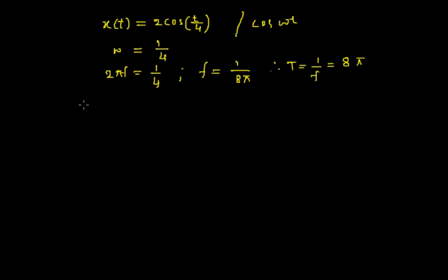Next, to test the periodicity, I will consider the signal x(t + T) which equals 2 times cosine of... I will replace this t with t plus capital T. Capital T is 8 pi, so the whole thing is divided by 4.